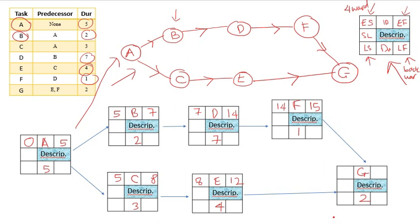Now we have two different values of EF to be used as the ES of G. One is 15, another one is 12. So which one shall we pick? We have to pick the largest one. Okay, so 15 goes here, and this 15 plus 2 is 17. And that is the forward pass.